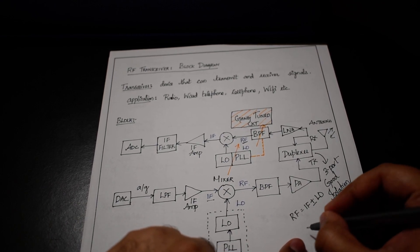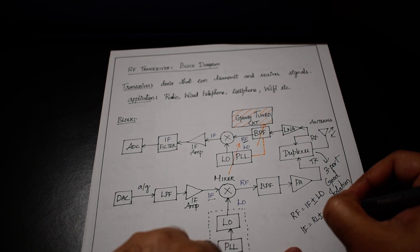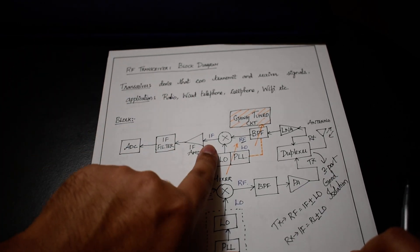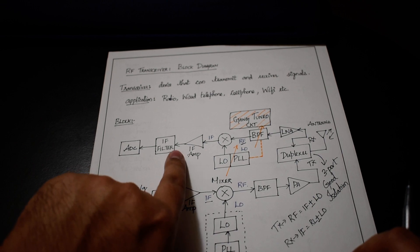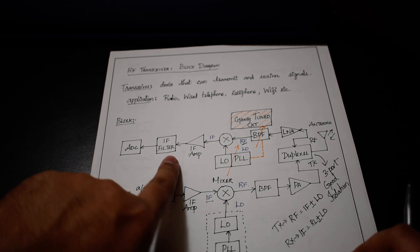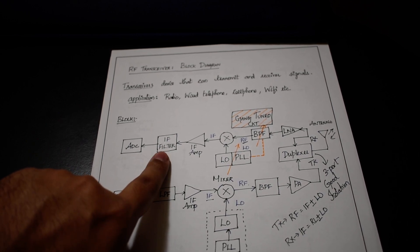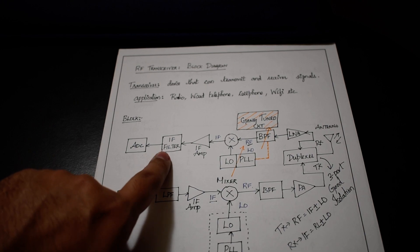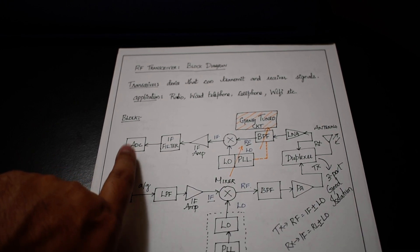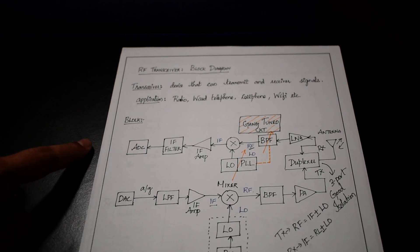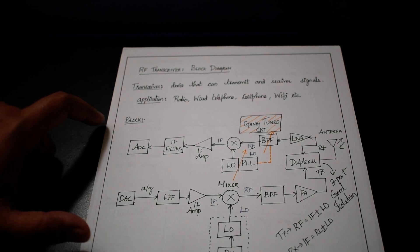The mixer output gives two IF values: RF plus LO and RF minus LO — similar to the TX side. We pass this through an IF amplifier. This stage needs a good filtering mechanism; the selectivity of the filter should be good so that we reject all higher frequencies we don't want. The filter output is given to the ADC, which converts the analog IF signal into digital. The ADC's output is then given to the demodulation block, which is the digital communication block we will discuss next.